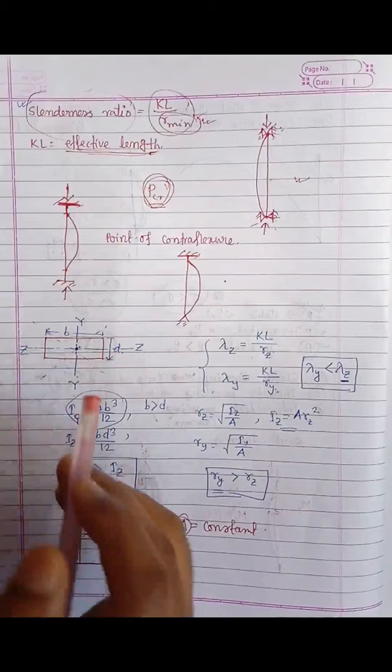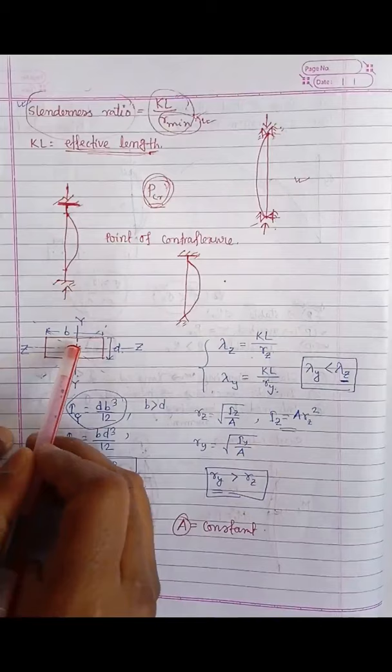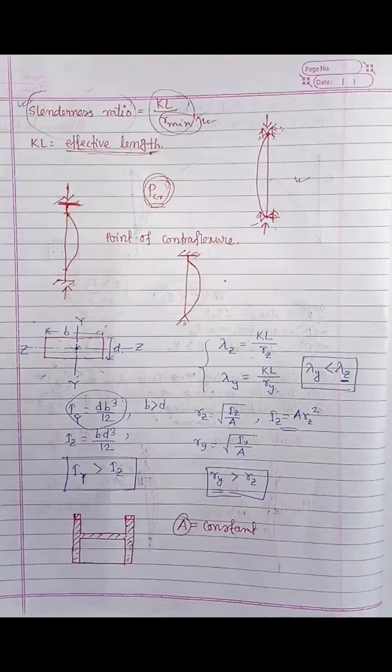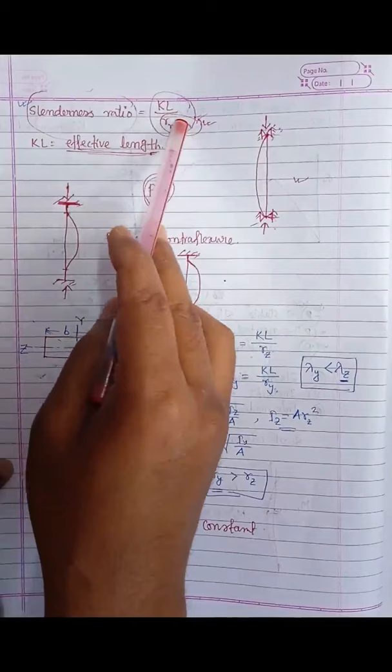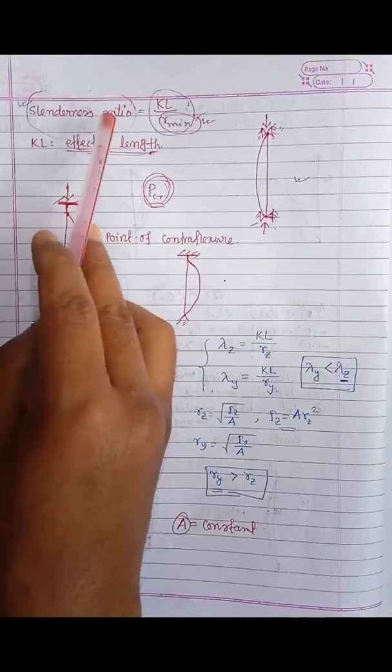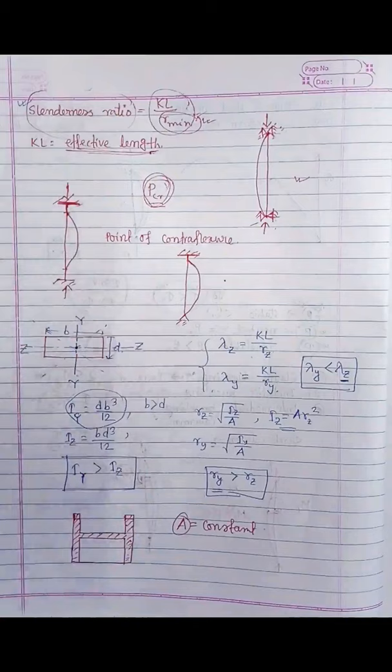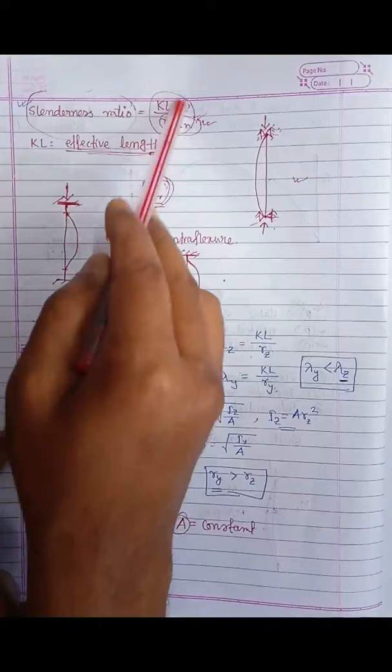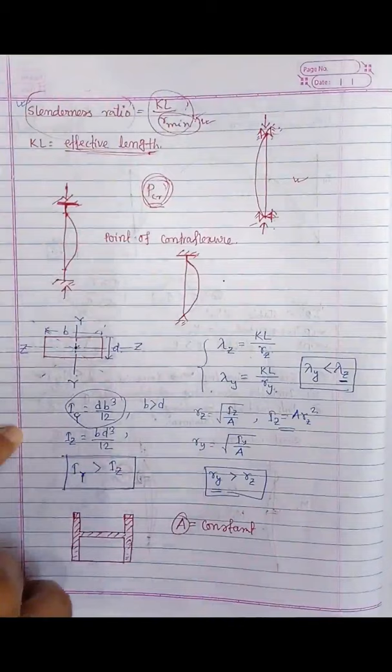If the spacing or distance from the extreme edge to the center is more, the material is distributed at greater spacing, so R becomes more and the slenderness ratio becomes less. If it is less slender, the chances of buckling become less. So our target is to reduce the effective length and also to increase the radius of gyration.